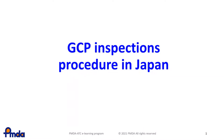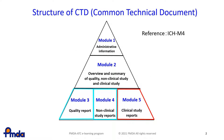In this lesson, GCP inspections procedure in Japan will be explained. The Common Technical Document, or CTD, is composed of five modules. Module 1 is a section which is specific to each ICH region, and modules 2 through 5 are common for all ICH regions. Module 2 is an overview and a summary of all documents, including quality of the product and data from non-clinical and clinical studies. And modules 3, 4 and 5 include reports of the tests.